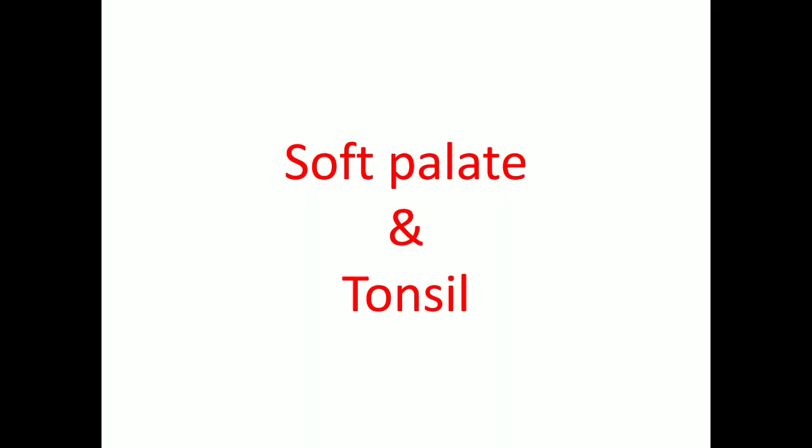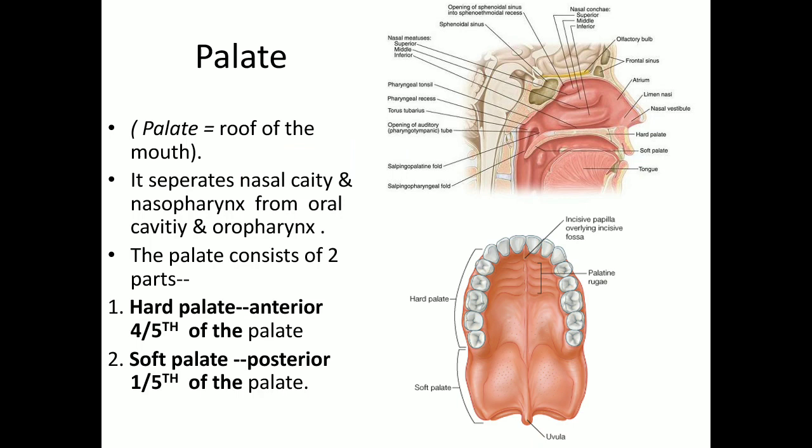Good morning. Today the topic of the class is soft palate and tonsil. First of all, about the palate: the palate is the roof of the mouth and it separates the nasal cavity and nasopharynx from the oral cavity and oropharynx. It is made up of two parts: hard palate and soft palate.